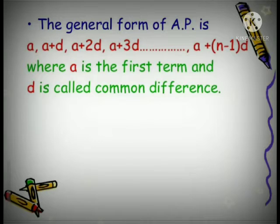Now, the general form of AP is a, a plus d, a plus 2d, a plus 3d, and so on, a plus n minus 1 into d, where a is the first term and d is called the common difference.